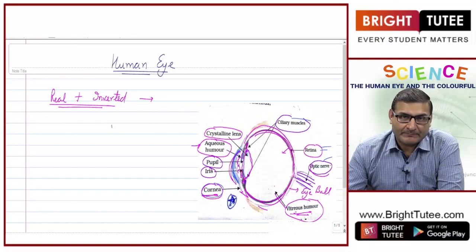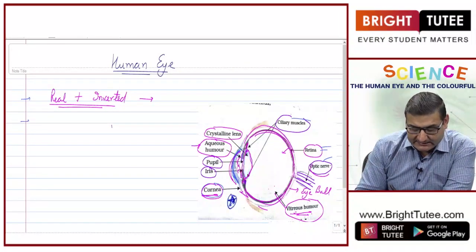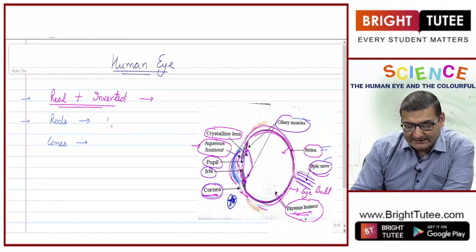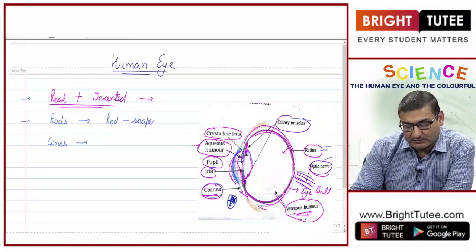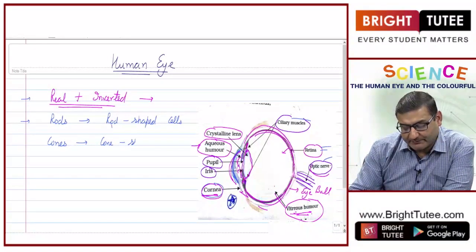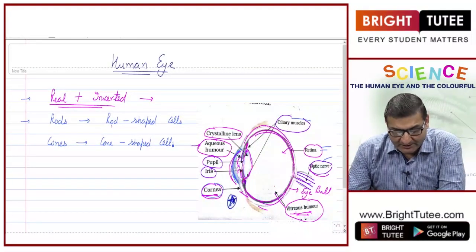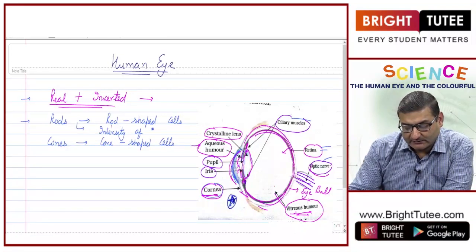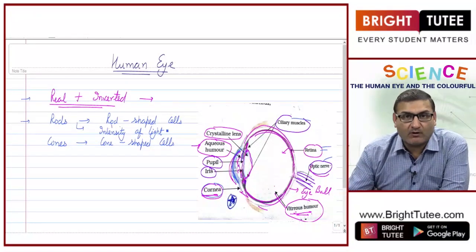Apart from these, our eyes contain two more things: rods and cones. These are cells named based on their shape — rods are rod-shaped cells and cones are cone-shaped cells present in our eyes. Rods respond to the intensity of light — the amount of light.